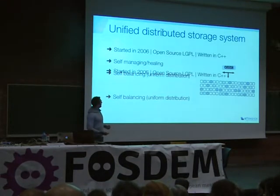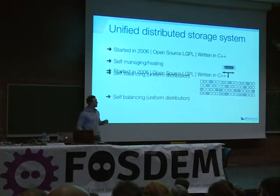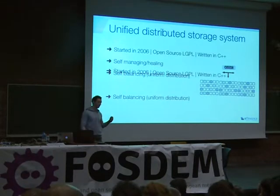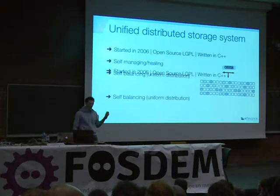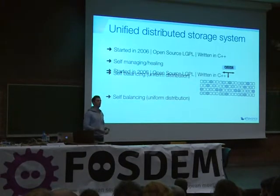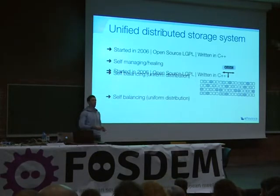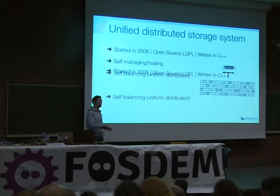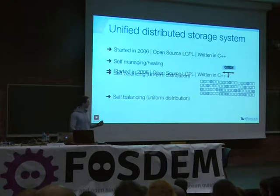What makes Ceph truly unique is a feature called CRUSH — which stands for Controlled Replication Under Scalable Hashing. This means that every time a client wants to do an I/O operation, we compute the location. Everything is based on calculation. We don't do any lookups on a hash table, and that makes the whole thing repeatable and deterministic. So that's one of the key advantages.